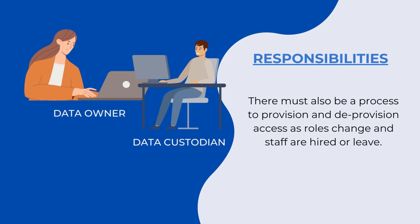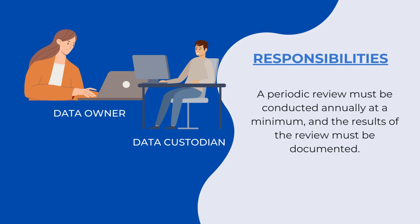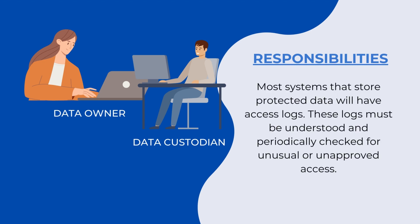This ensures that access privileges are aligned with current responsibilities. It's not enough to establish these processes and forget about them — regular review is essential. At a minimum, an annual review must be conducted to ensure that access permissions remain appropriate and necessary, and the results of the review must be documented. It is recommended that the application, service, or system used for storing protected data can log access-related activities. For highly sensitive data, this logging capability is a requirement. As a data owner or their delegate, it is your responsibility to understand this logging capability and ensure that access logs are reviewed periodically.